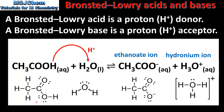Here we can see the structures of the species involved in the reaction. Ethanoic acid donates this proton to the water molecule. The water molecule uses one of its lone pairs of electrons on the oxygen atom to form a bond with the proton. So a Bronsted-Lowry acid must contain hydrogen, and a Bronsted-Lowry base must have a lone pair of electrons.